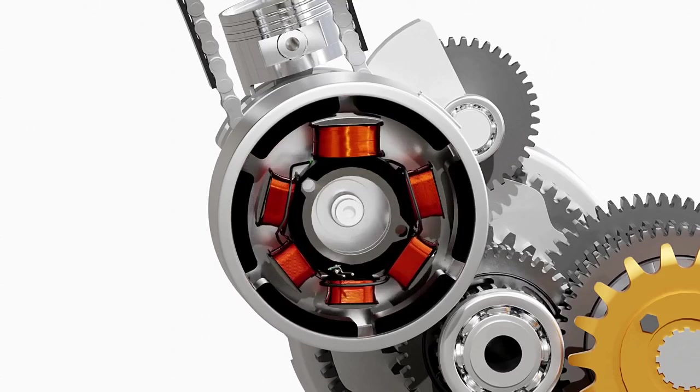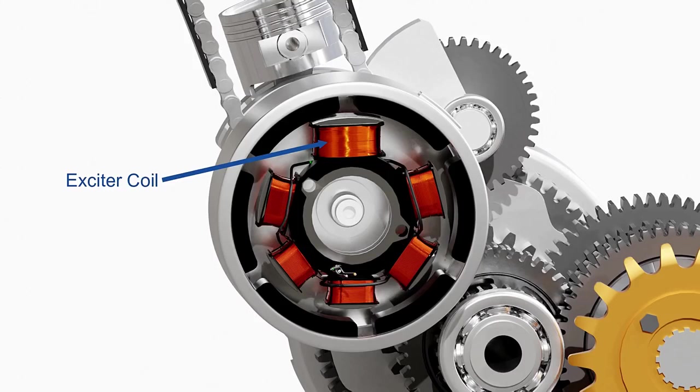The output for the ignition purpose is received from the exciter coil. This coil has a denser winding of thinner wire than the other coils to produce higher voltage for the ignition.